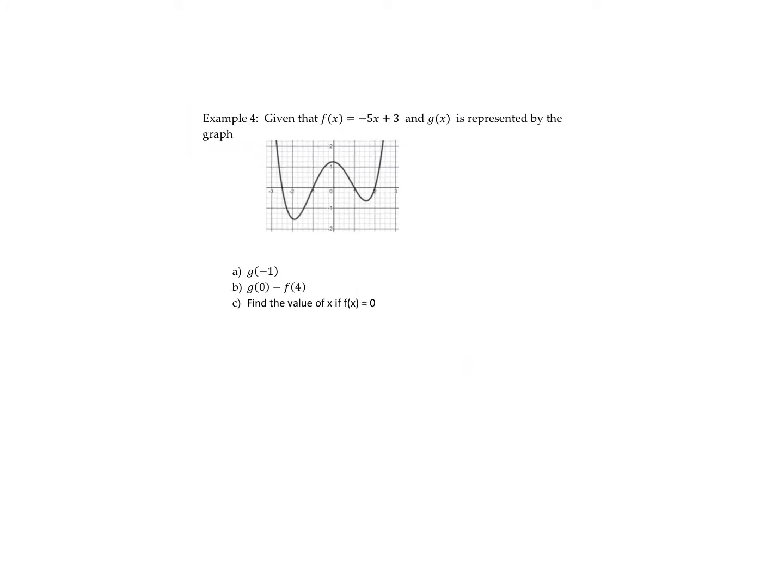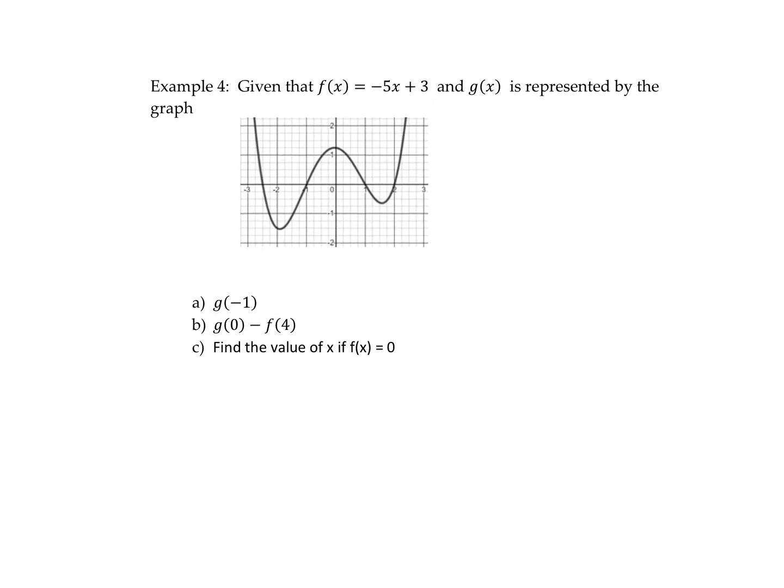Sometimes we might have a function represented by equation and maybe the other one is represented by a graph. So if I want to find g of negative 1, this graph is g of x. g of negative 1 means find the value of the function when x is negative 1, or find y when x equals negative 1. So I'm going to go along my x axis to negative 1, and the value of y is 0. So g of negative 1 has a value of 0. I can find that directly from the graph. I don't need to know the equation. I just find that value on the graph.